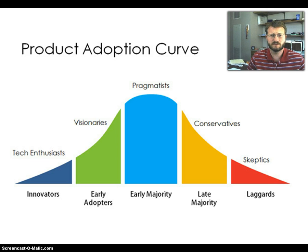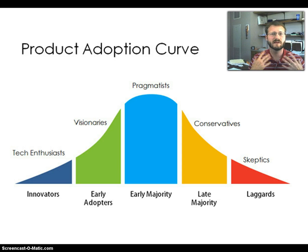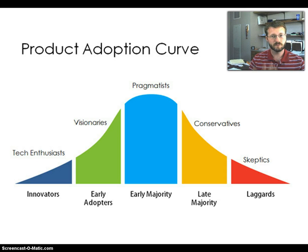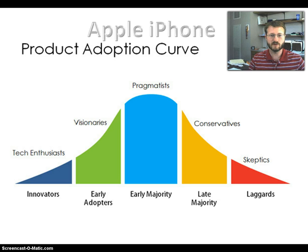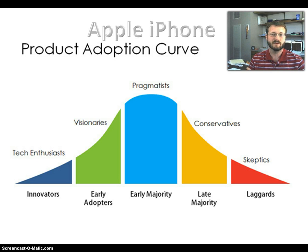The product adoption curve has five levels: innovators, early adopters, early majority, late majority, and laggards. At the first part of the curve going upward, that's the first people to get into it. Then it gets to the masses, and as it goes down the curve, those are the people that are late to the party. I want to take a quick look at this idea using the Apple iPhone as an example.